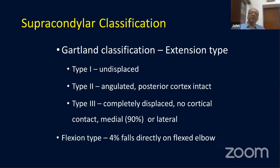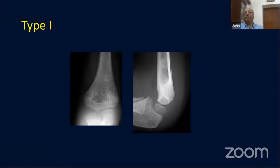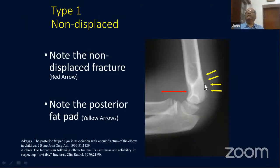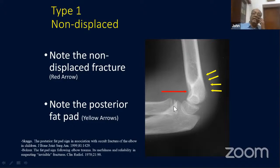Type 1 can sometimes be missed, so watch carefully for the fat pad sign. The posterior fat pad sign is normally not seen in a normal child — if it is present, it suggests hemarthrosis indicating a fracture. The anterior fat pad may be present even in a normal elbow, but displacement of it is significant. These are two key things to look for.